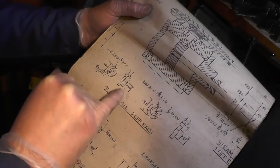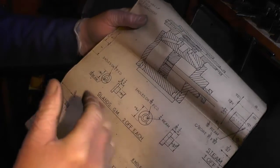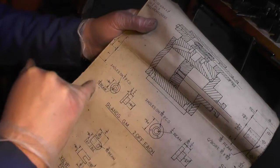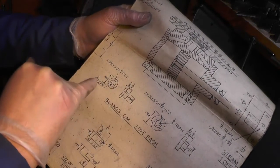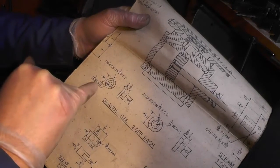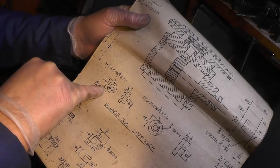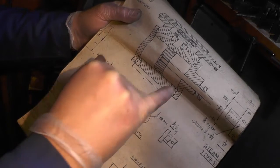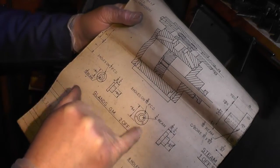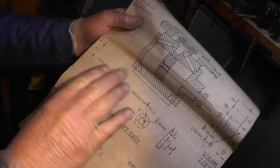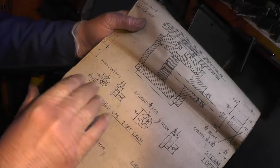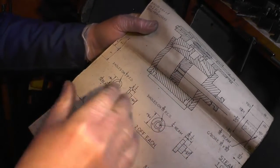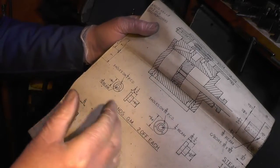This one here is the valve chest and it's got an OD of 5/8 inch diameter, and this one is the cylinder cover with an OD of 3/4 inch. They're identical in manufacturing, it's just that one's a little bit bigger than the other.